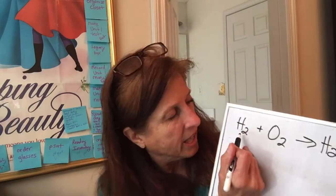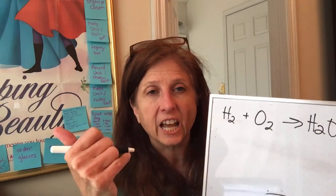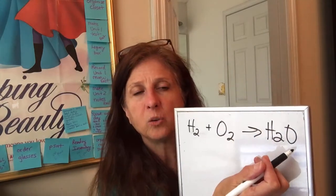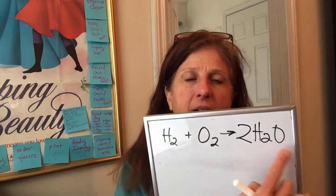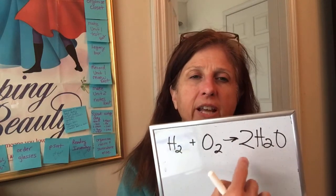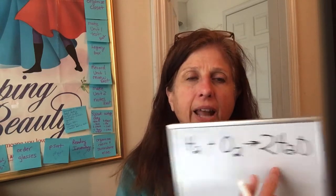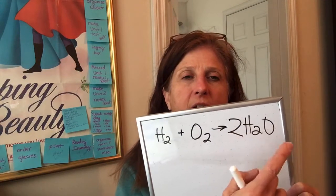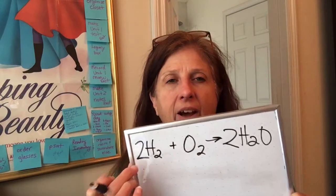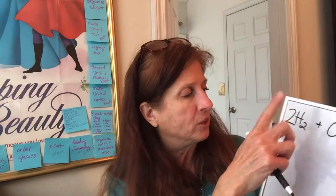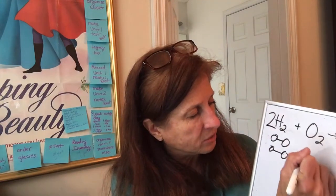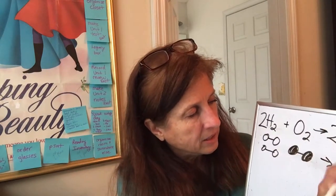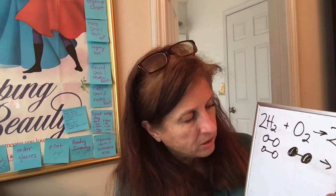The big numbers in front are called coefficients and you can only change those. I have two hydrogens here and two here — check, obeying the law. I have two oxygens here but only one here — not obeying the law. So I write a big 2 in front of the water. But that messed up my hydrogens — now I have two times two, which is four hydrogens here, and only two there — so I put a big 2 in front of the hydrogen as well.